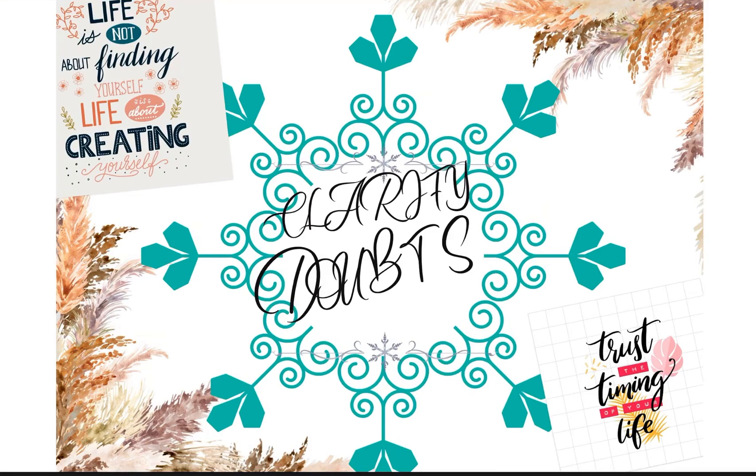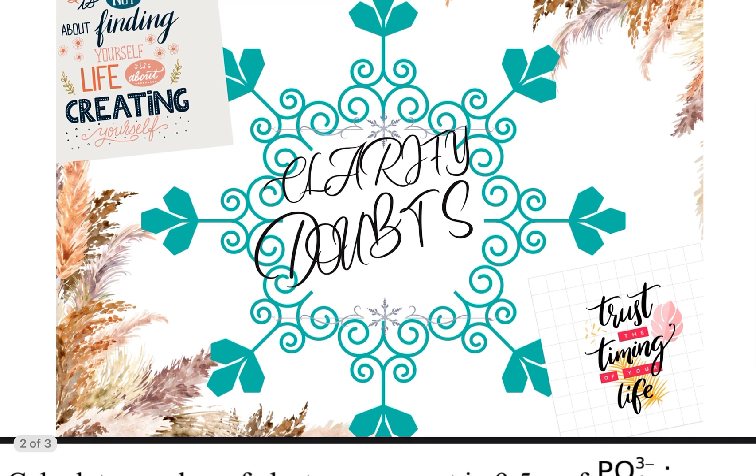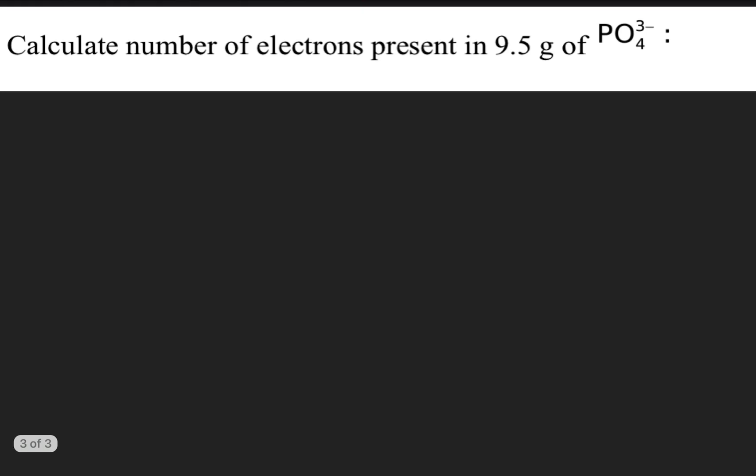I started a channel named Clarify Your Doubts, so are you ready for our first question of the channel? I hope you're ready and I'm moving on. The question is: calculate the number of electrons present in 9.5 grams of PO₄³⁻. This is the first question of the channel.